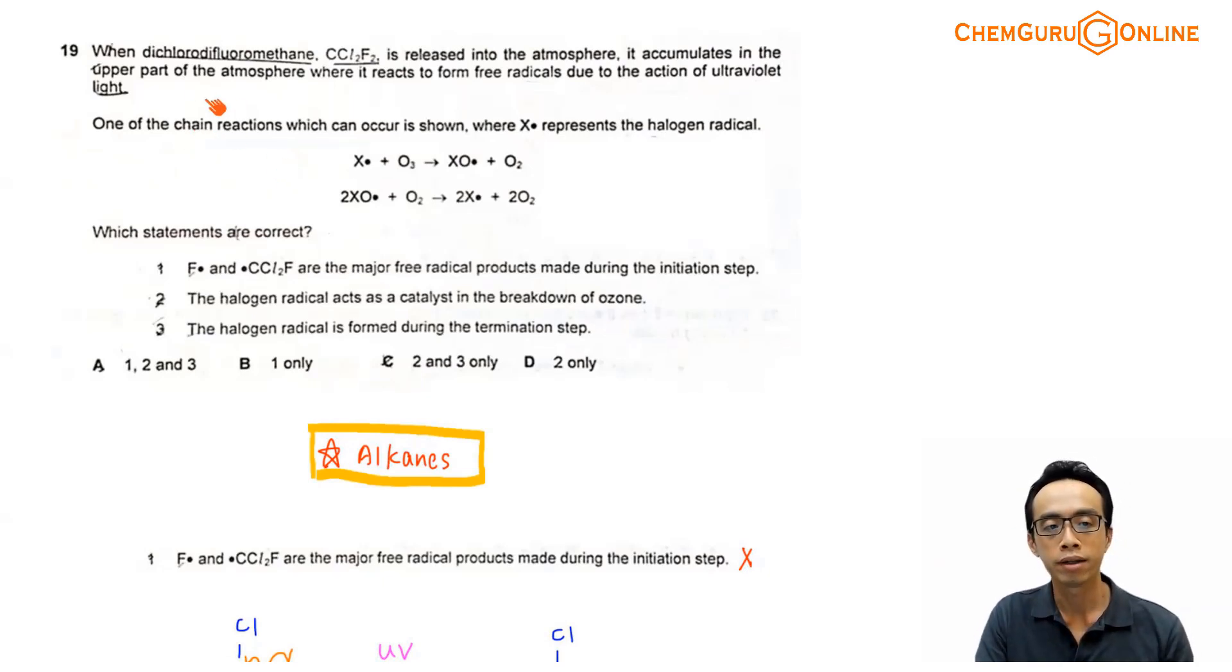Now question 19, when dichlorodifluoromethane, CCl2F2, is released into the atmosphere, it accumulates in the upper part of the atmosphere, where it reacts to form free radicals due to the action of ultraviolet light. One of the chain reactions which can occur is shown where X dot will represent the halogen radical.